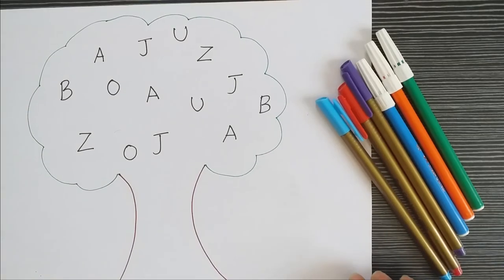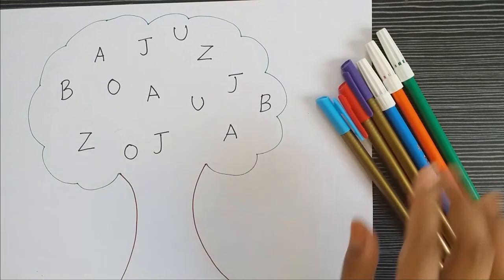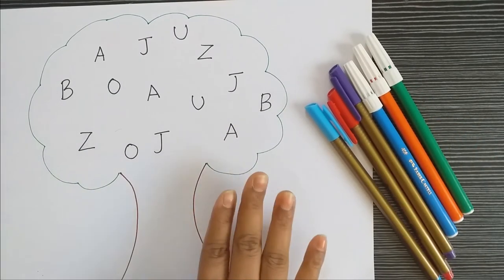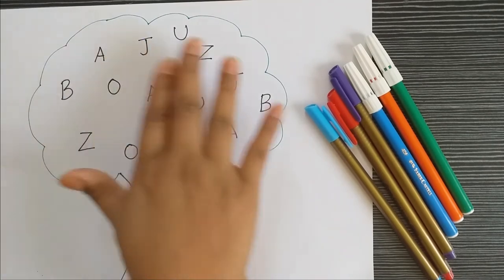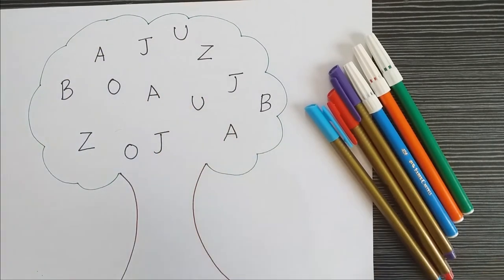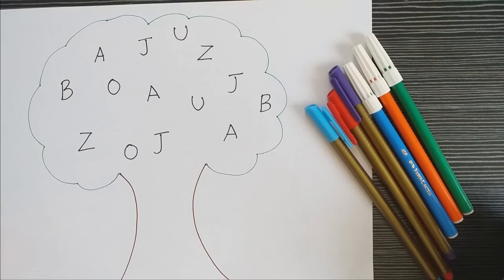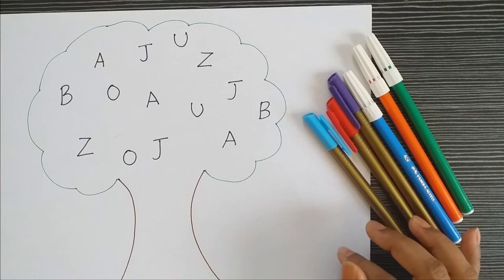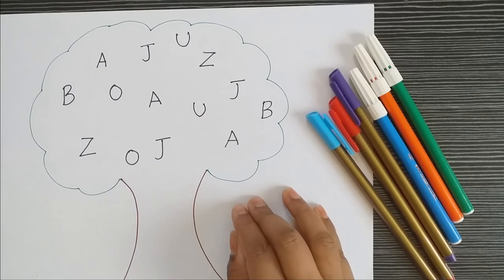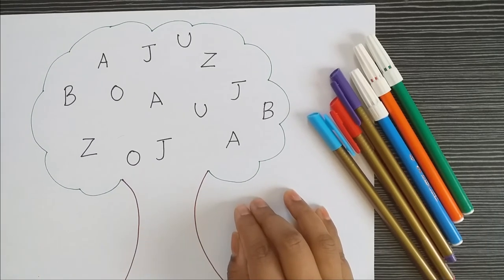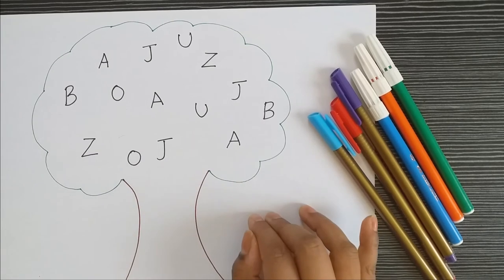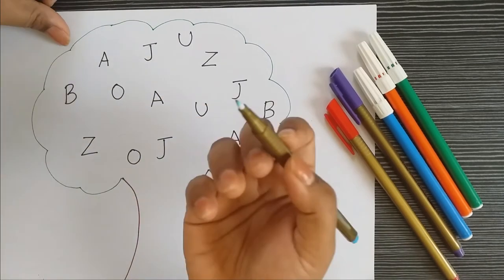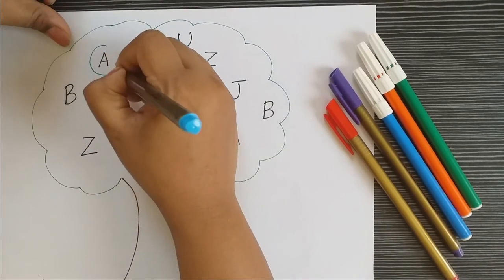This is our second activity. For this you need a paper and some sketch pens or color pencils. I have drawn a tree and written some alphabets on it. I'm going to give some instructions and children have to follow them — this helps their listening skills and alphabet recognition. The first instruction is: circle the A. Children, take a color pencil or sketch pen and circle the A.